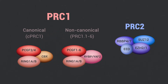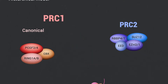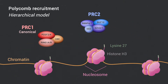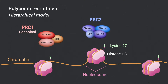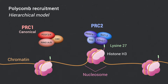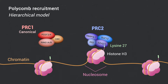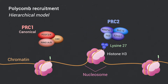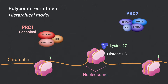They can be stratified into canonical and non-canonical PRC1. In the hierarchical model of polycomb recruitment, the PRC2 complex is first recruited on chromatin and trimethylates lysine-27 of histone H3,